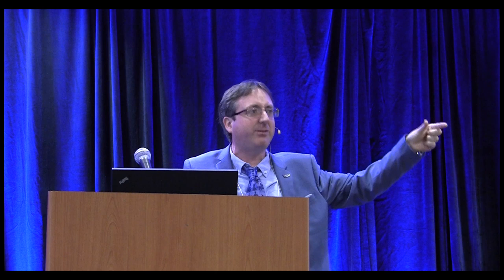Using rocket soundings we can now see that as you go up even higher, the stratosphere pauses again and then temperature decreases, then increases again — a back and forth pattern. A shooting star is probably in the mesosphere or mesopause region. For the rest of the talk we'll focus on the lower three regions: the troposphere, tropopause, and stratosphere — the region balloons reach up to about 35 kilometers, which comprises 99% of the atmospheric air mass.